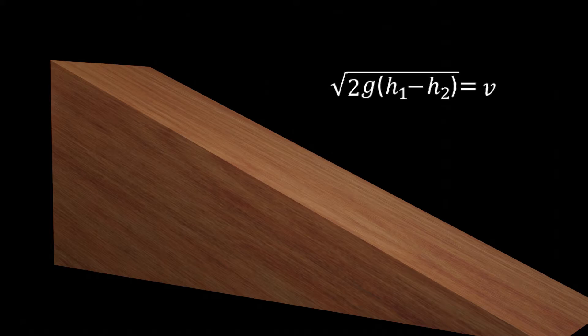What if we want the velocity in terms of the distance the object slides down the incline instead of the change in height?